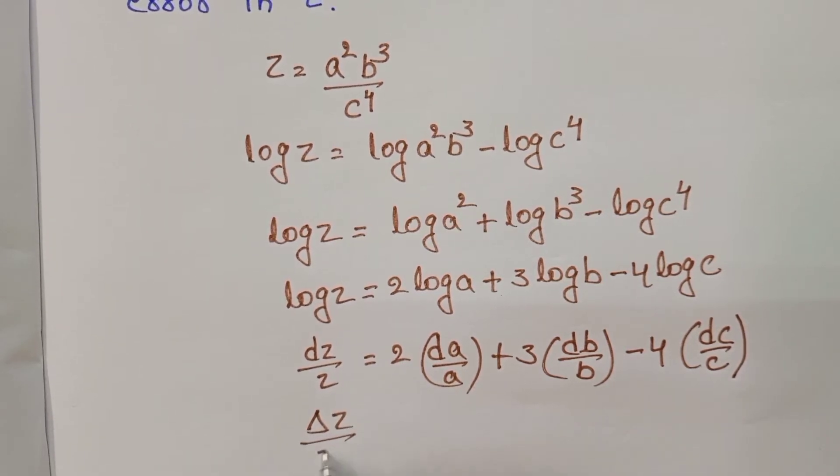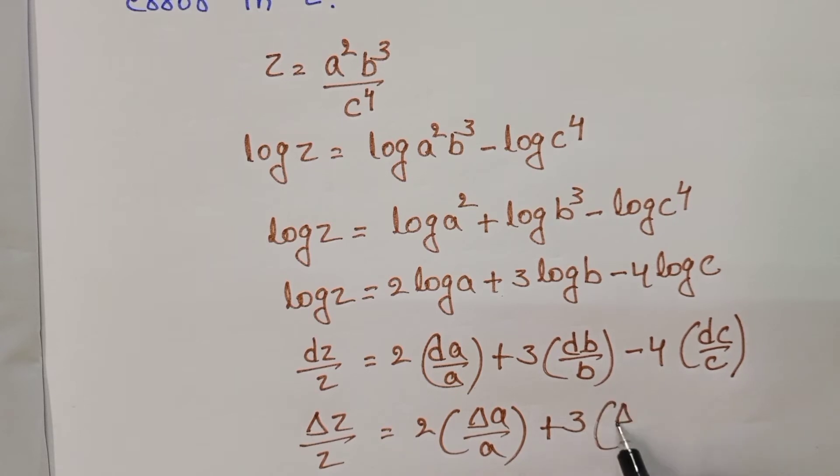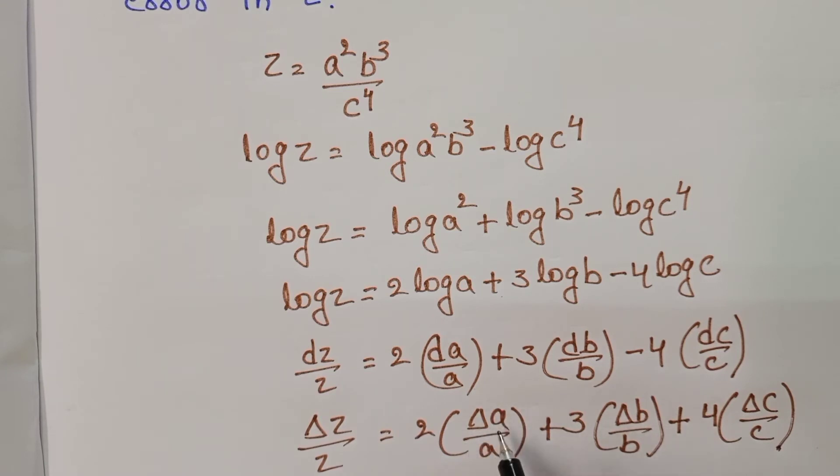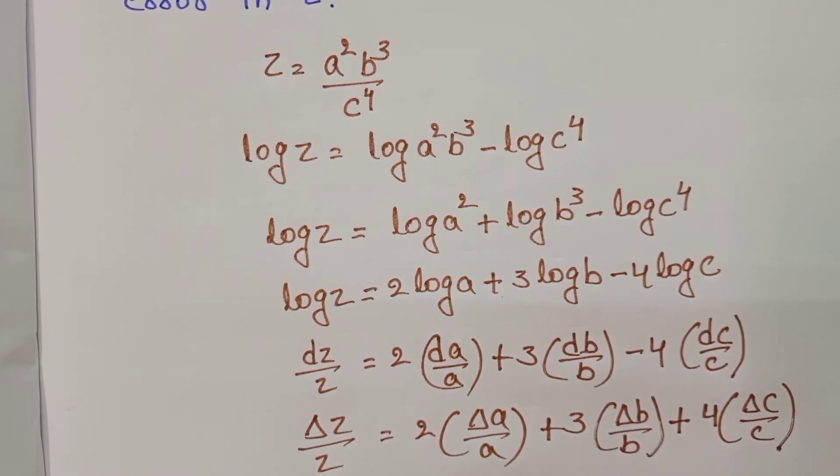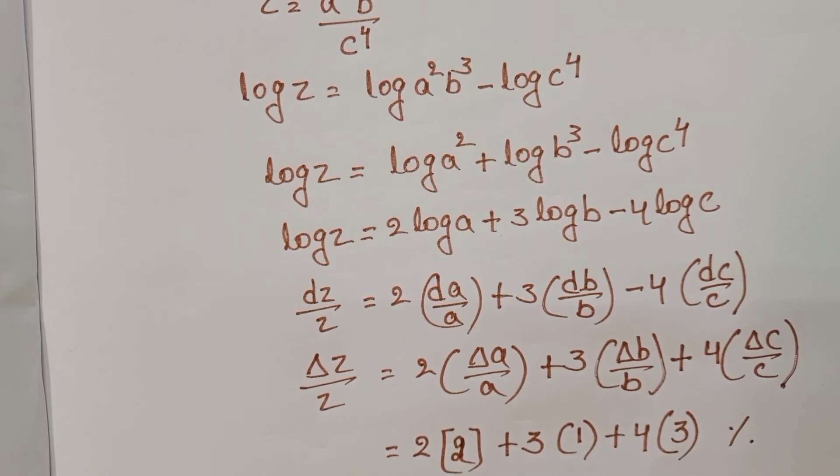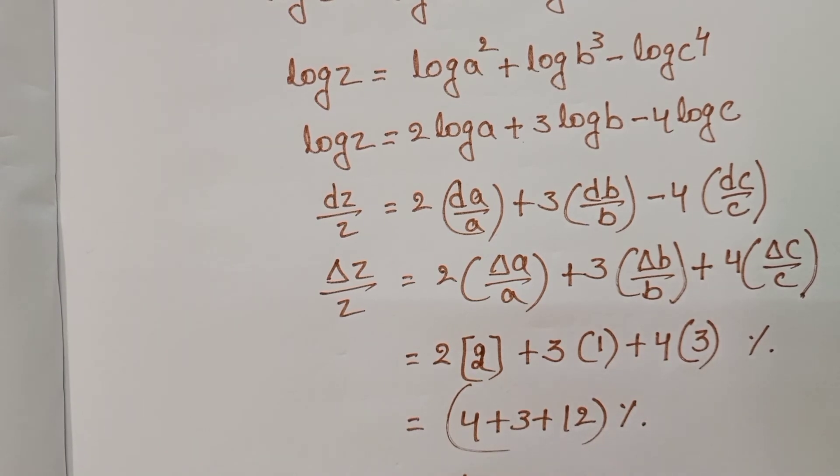So from this, delta Z by Z equals 2 times delta A by A plus 3 times delta B by B, in place of minus also take plus sign, 4 times delta C by C. Given percentage error of A is 2%, B is 1%, and C is 3%. This equals 2 times 2 plus 3 times 1 plus 4 times 3 percent, which equals 4 plus 3 plus 12, that equals 19%. So the maximum percentage error of Z equals 19%.